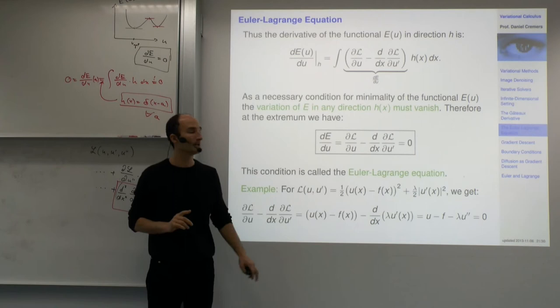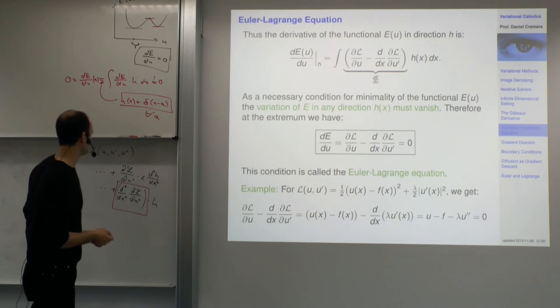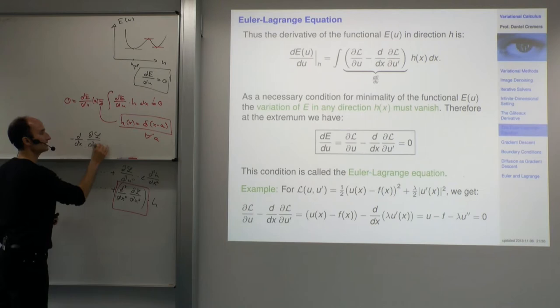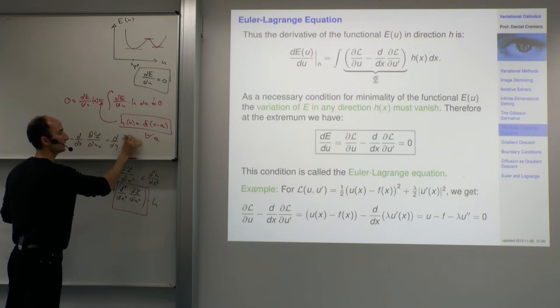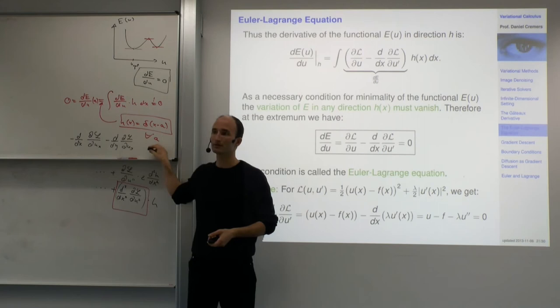This is all for one spatial dimension x, but you can do the exact same for two or three spatial dimensions. With two spatial variables you would have d by dx of dL by du_x minus d by dy of dL by du_y. This works exactly the same way — you just have several terms for the derivatives.